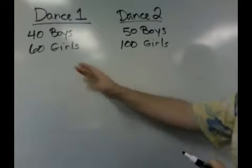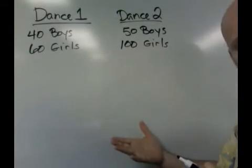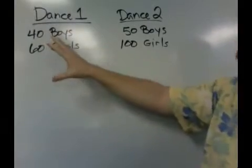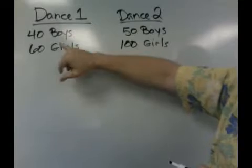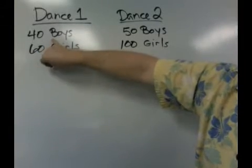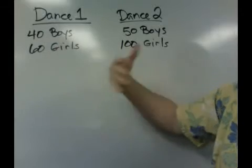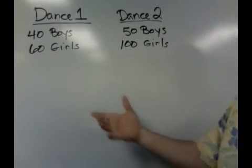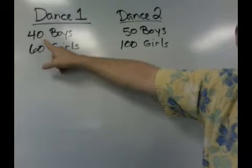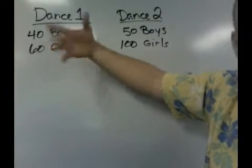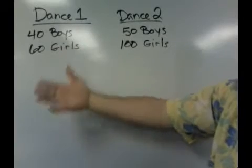For this video, I'm going to show you how to use ratios to make a decision. Let's start with a school. A middle school has a dance, and at the dance, 40 boys show up and 60 girls show up. The student council says that's kind of nice, but we'd like to increase the rate of participation of the boys — we'd like more boys to come at a higher rate.